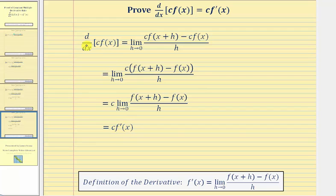Now we have the proof that the derivative of a constant c times f of x with respect to x equals c times f prime of x.